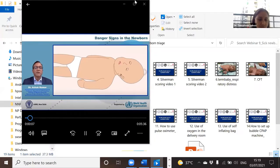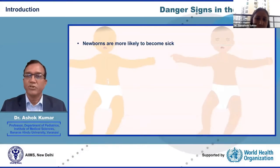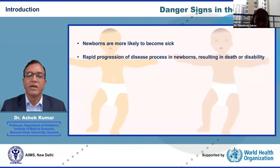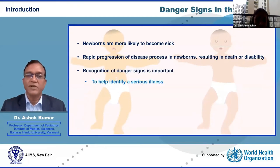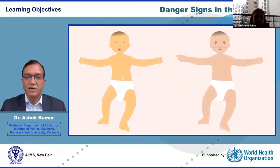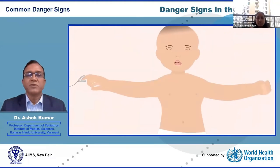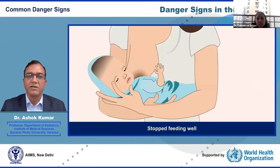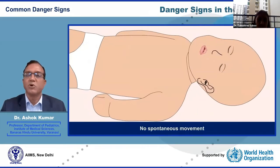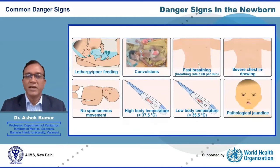In this webinar segment on danger signs in newborns: newborns are more likely to become sick compared to older children or adults, and disease progression can be rapid, resulting in death or disability. Recognition of danger signs is therefore important to identify serious illness, prioritize care, and improve outcomes. The signs most useful in identifying a sick newborn are stopped feeding well, history of convulsions, fast breathing, severe chest indrawing, no spontaneous body movement, low or high body temperature, and pathological jaundice.